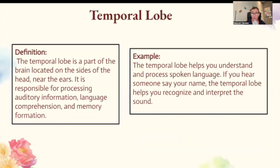Temporal lobe. The temporal lobe is a part of the brain located on the sides of the head near the ears. It's responsible for processing auditory information, language comprehension, and memory formation. For example, the temporal lobe helps you understand and process spoken language. If you hear someone say your name, the temporal lobe helps you recognize and interpret that sound.